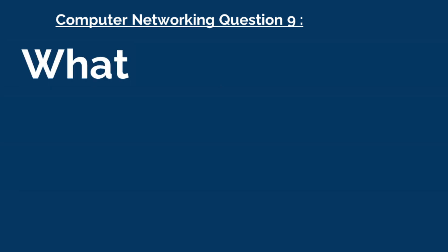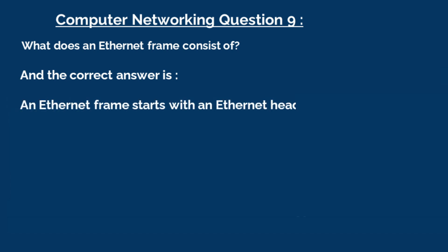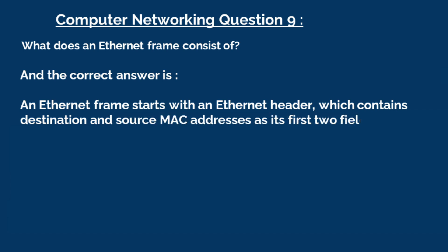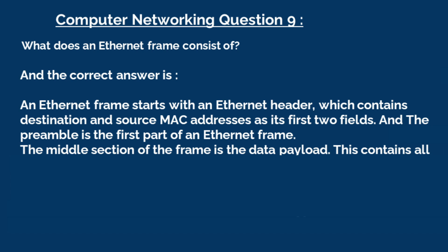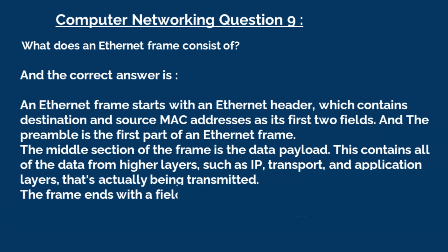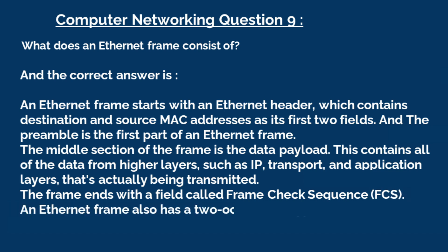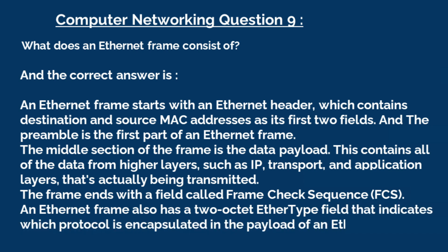Question 9: What does an Ethernet frame consist of? The correct answer is, an Ethernet frame starts with an Ethernet header, which contains destination and source MAC addresses as its first two fields. The preamble is the first part of an Ethernet frame. The middle section of the frame is the data payload, which contains all of the data from the higher layers such as IP, transport, and application layers that's actually being transmitted. The frame ends with a field called frame check sequence (FCS). An Ethernet frame also has a two-octet EtherType field that indicates which protocol is encapsulated in the payload of an Ethernet frame.